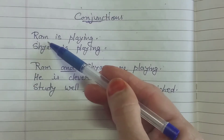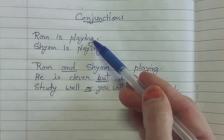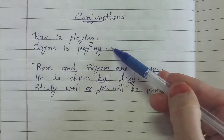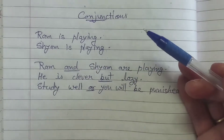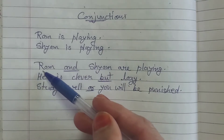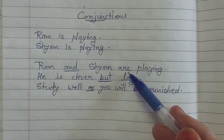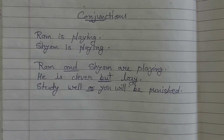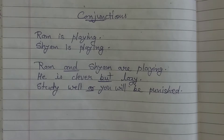Let's take an example. There are two sentences: one is 'Ram is playing' and second is 'Shyam is playing.' We can join these two sentences using the link word 'and' — 'Ram and Shyam are playing.' Likewise, 'He is clever but lazy,' and 'Study well or you will be punished.' Here, 'but' and 'or' are conjunctions — they are joining words or groups of words together.